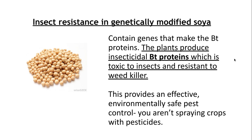The first one we need to know about is how we can genetically modify soya so that it's insect resistant. What they do here is modify the soya so it produces a protein called a BT protein. This BT protein acts as an insecticide because it kills off insects — the protein is toxic to insects, so any insect that feeds on the soya will die.